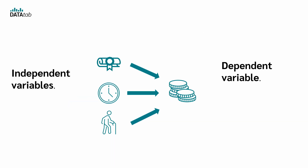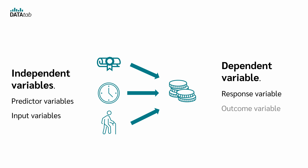Depending on your field, independent variables may also be called predictor variables or input variables, while the dependent variable might be referred to as the response, output, or target variable.